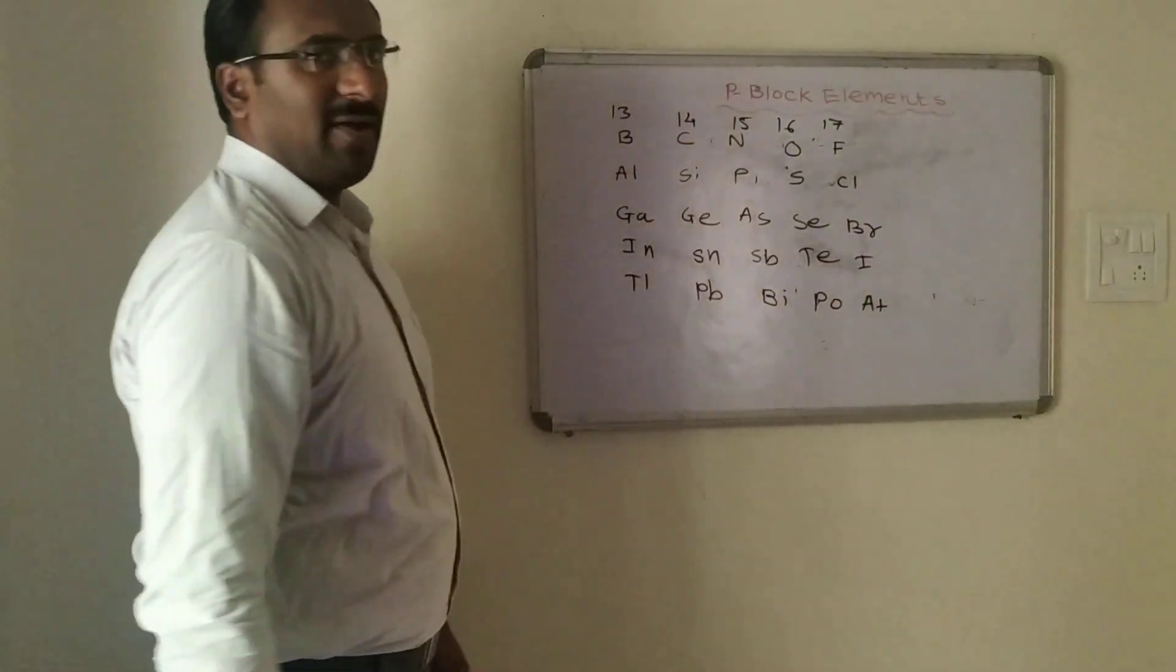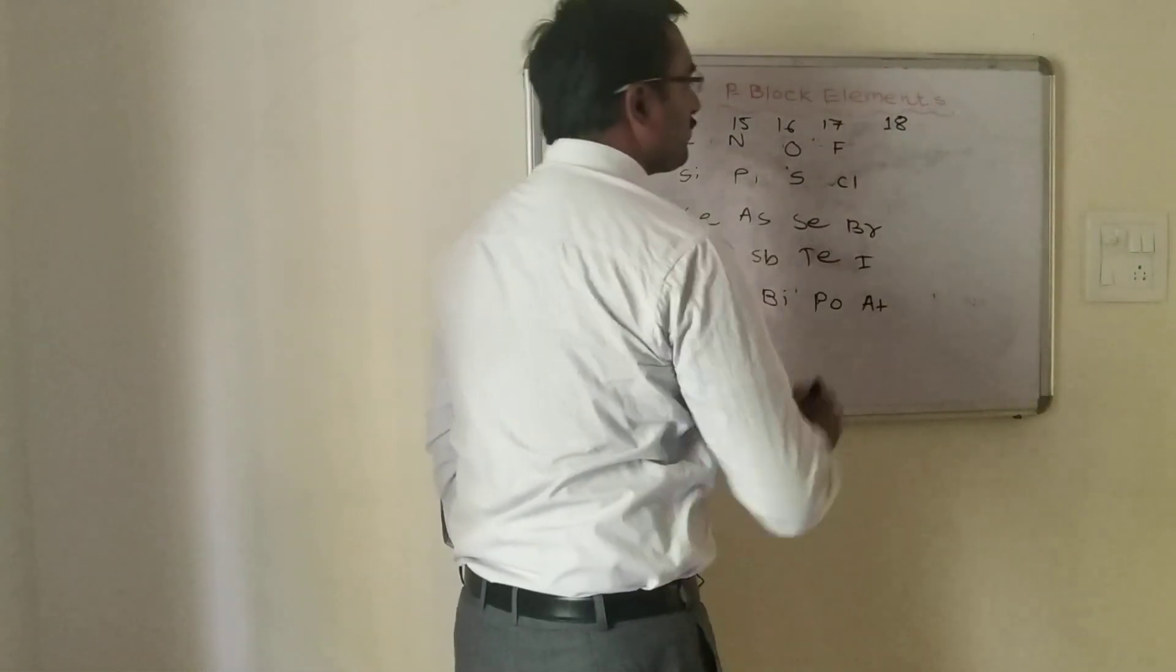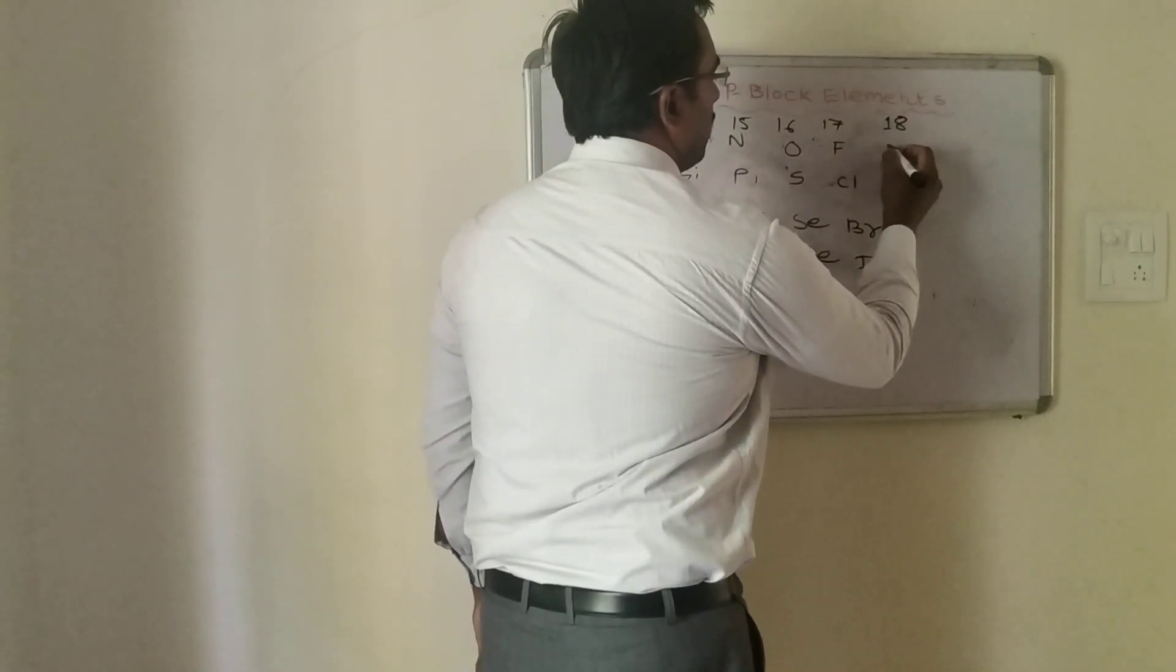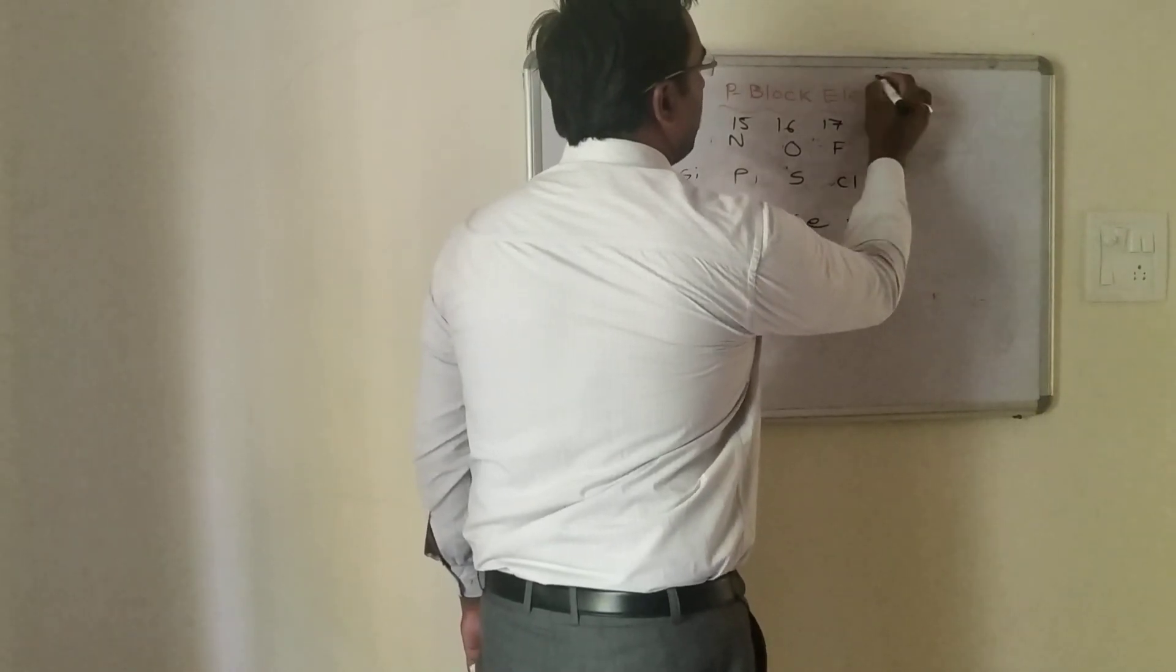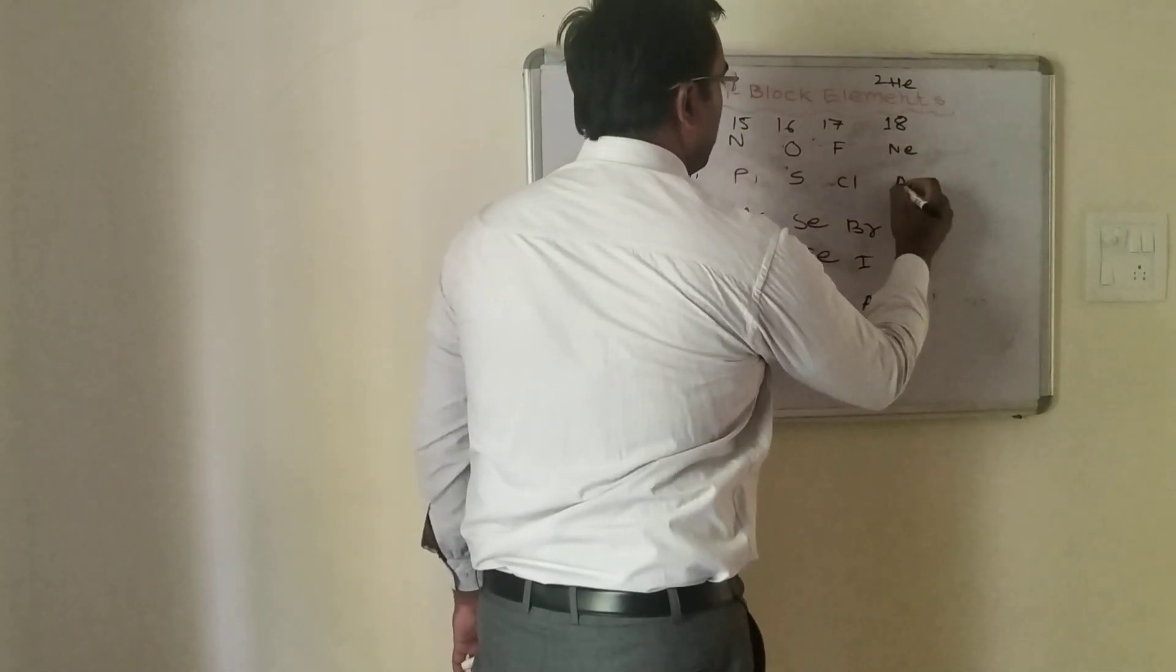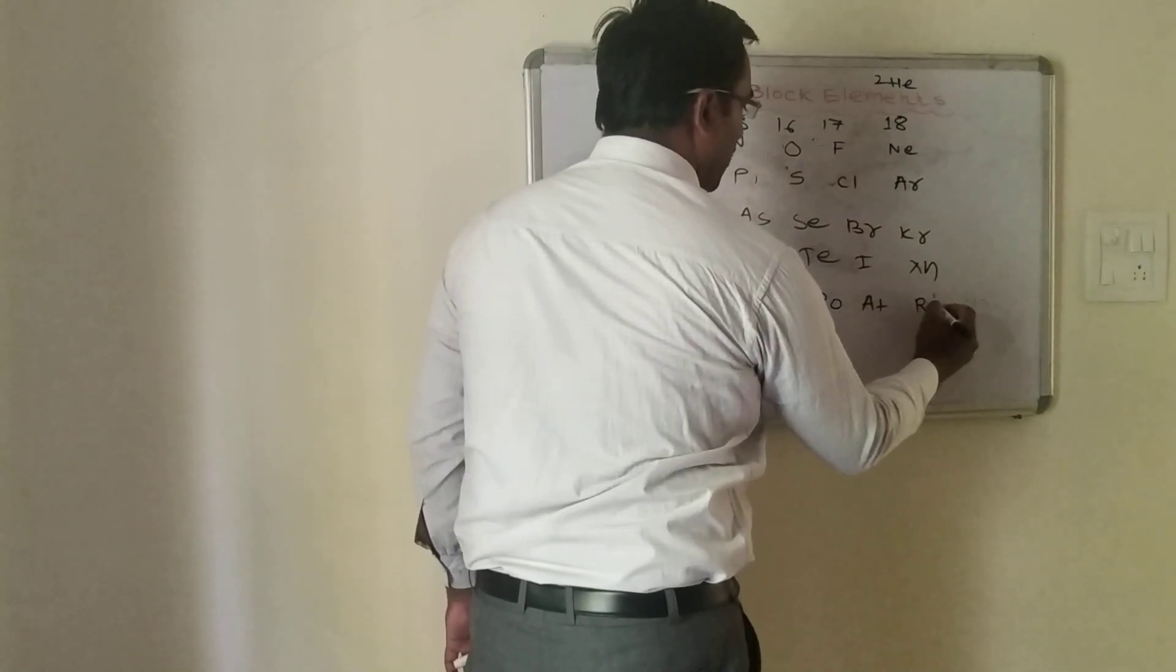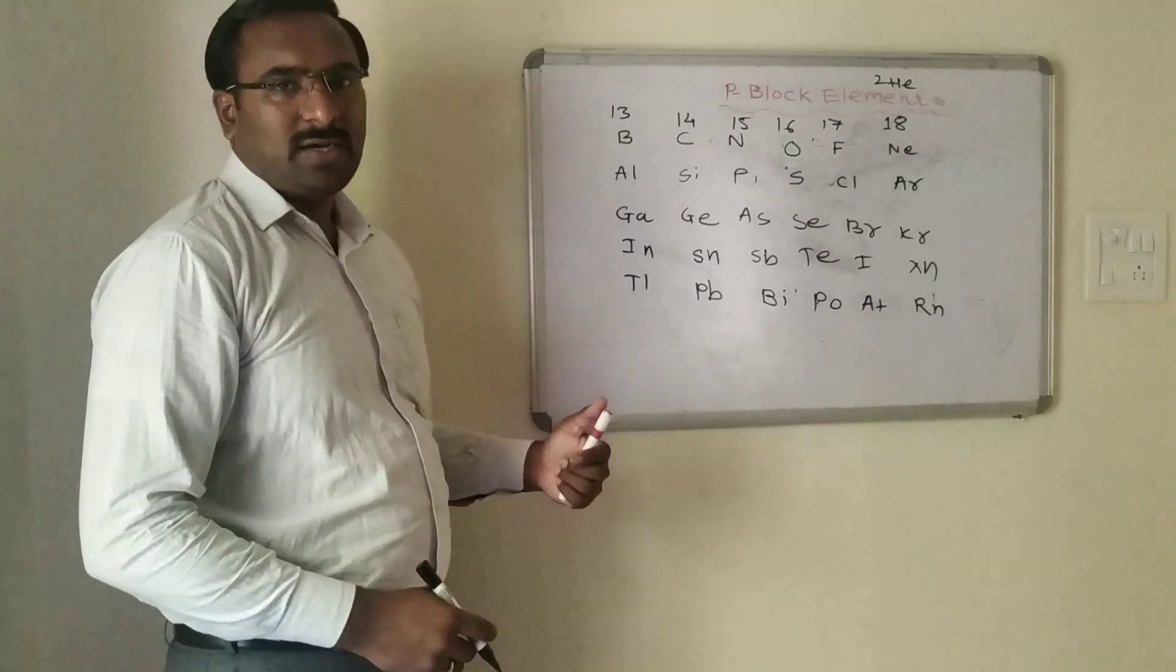Group 18 is the noble gas family. The first representative member is helium with atomic number 2, then in the second period neon, followed by argon, krypton, xenon, and radon. So this is our p-block.